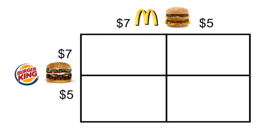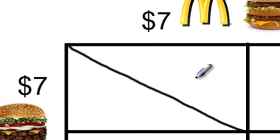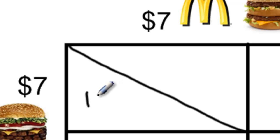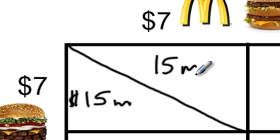If both Burger King and McDonald's choose to price their meals at seven dollars, the level of economic profit expected to be earned by Burger King will be fifteen million dollars, and the level of economic profit that McDonald's can expect to earn will also be fifteen million dollars. In other words, the two firms will split the market, each firm earning a profit of fifteen million dollars.